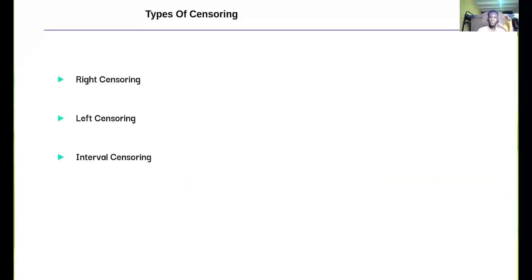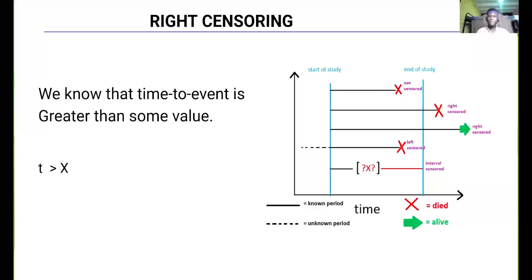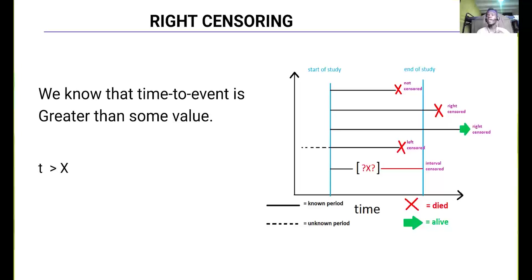We have three types of censoring: right censoring, left censoring, and interval censoring. Right censoring is when we know that the time to event is greater than some value, but we don't know the exact value. For example, we know that a person died from cancer after 2009, but we don't know the exact day or time the person died. That particular observation is right censored.